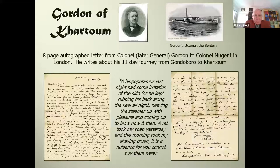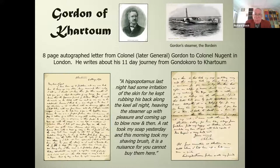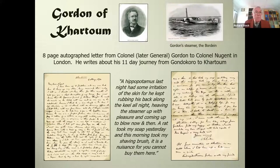This is a letter signed by General Gordon when he travelled from Gondokoro on the Uganda border to Khartoum — it took him 11 days. He says everybody was surprised he got over that distance in such a short period of time. He talks about slavers and other incidents on the journey along the Nile. What brings it to life is the picture of Gordon, his steamer, and the quotation about the problem he had with hippopotamuses keeping him awake at night, then losing his soap and his shaving brush — because on the Nile in 1874, you couldn't just pop into the local store and buy replacements.